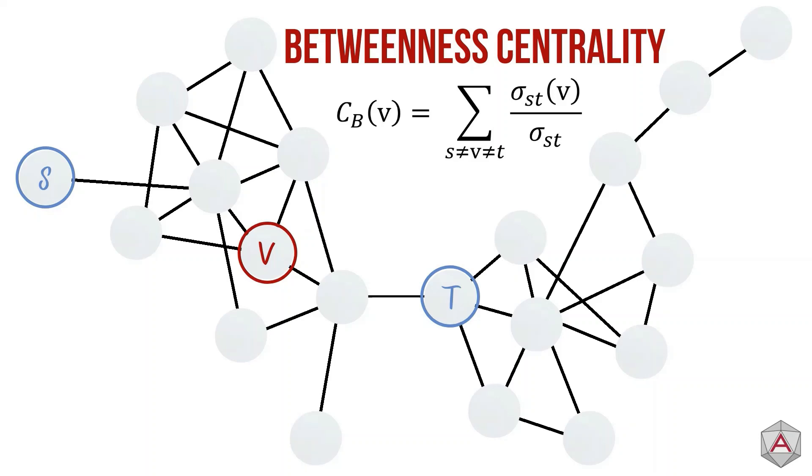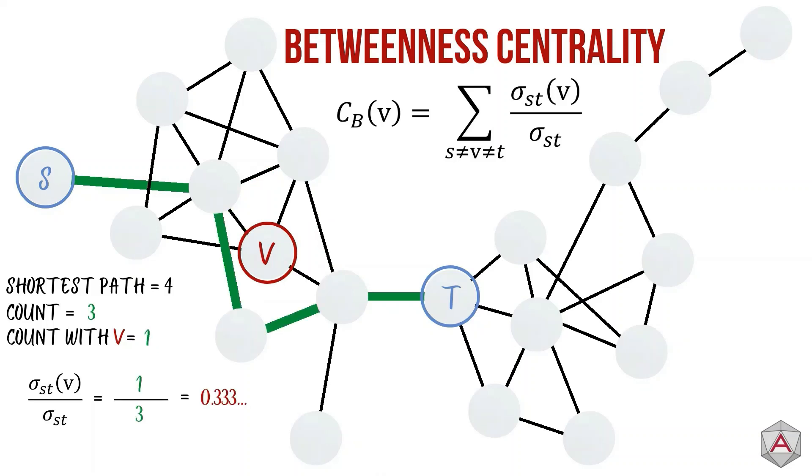We can pick two other nodes on our connected network, S and T, which stands for source and target. We can see that the minimum number of hops between S and T is 4, so we should count how many different paths we can take between S and T with 4 hops. We should also count how many of these contain our node, V. We can divide our count containing V by our total count to get 0.33 recurring.